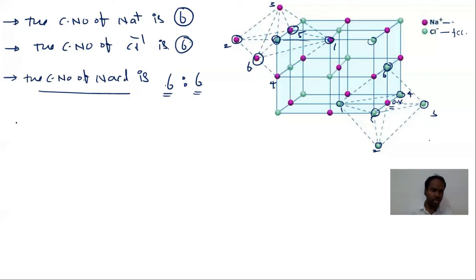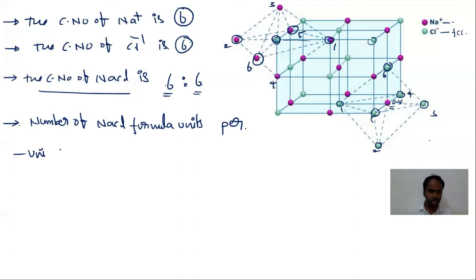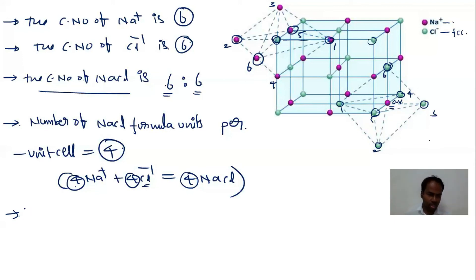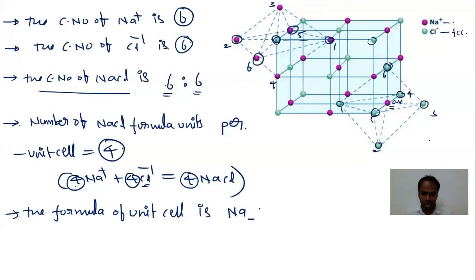The number of NaCl formula units per unit cell is four — there are four Na⁺ and four Cl⁻ ions per unit cell, combining to give four NaCl units. Therefore the formula of the NaCl unit cell is Na4Cl4.